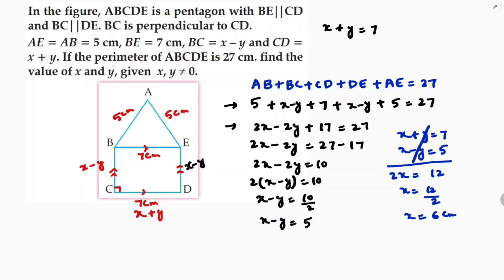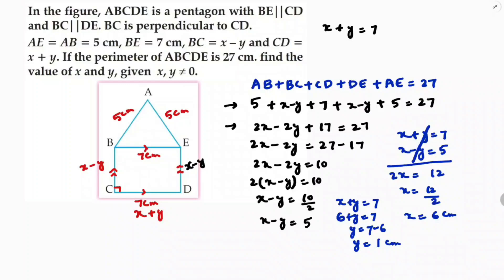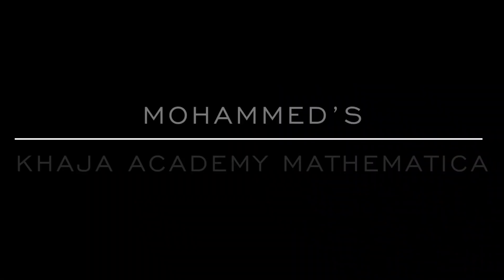Since x equals 6 and x plus y equals 7, substituting gives 6 plus y equals 7, so y equals 1 centimeter. Therefore x equals 6 centimeters and y equals 1 centimeter.